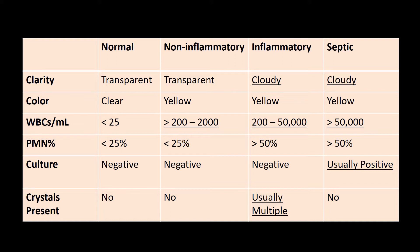The big thing to point out for septic joints in particular is that they can have negative cultures. So if you're presented with a vignette where the patient has 60,000 white blood cells and a negative gram stain, the next best step is to start antibiotics. The most common organism is staph aureus, and it's often due to hematogenous spread.